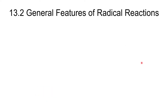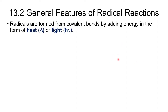Now let's look at the general features of radical reactions — what we need to make them work. The most common ways to generate radicals are heat or light, typically ultraviolet light, though some weaker bonds can be cleaved with visible light depending on bond strength.